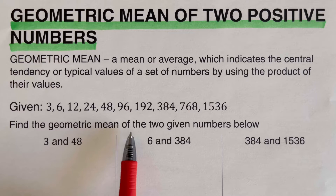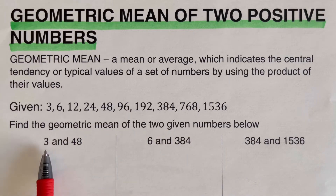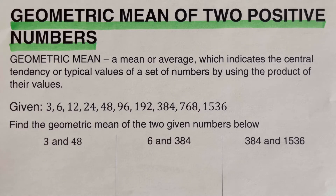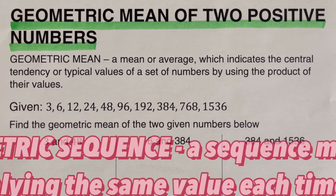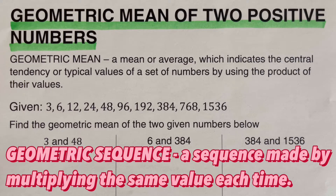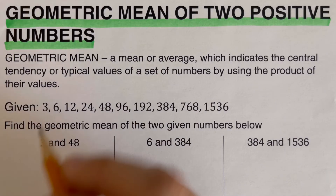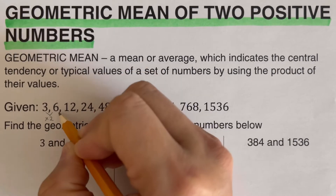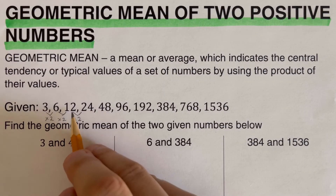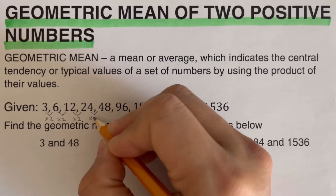Let's take this first example: find the geometric mean of the two given numbers — 3 and 48. In this first set of examples we are given a geometric sequence. A geometric sequence is a sequence made by multiplying the same value each time. In this problem our multiplier is 2.